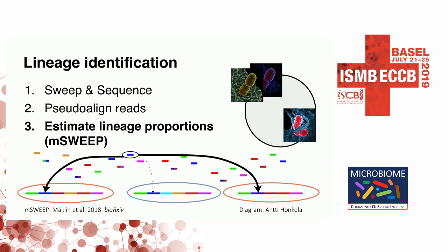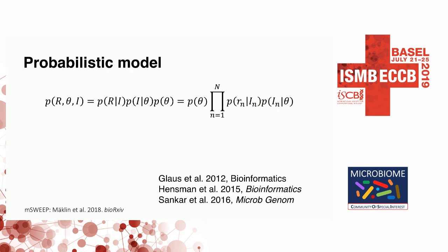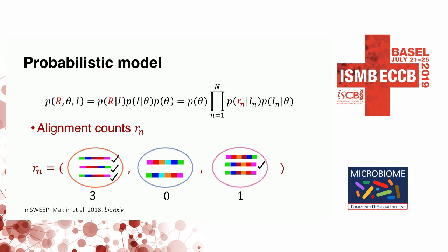This turns out to work very well. We are able to say that a read is very strongly associated with one lineage — the one it probably came from — and we get pretty deep within the species if we do it this way. This probabilistic model is similar to models used in RNA sequencing data and transcript expression estimation, which is a very similar problem.